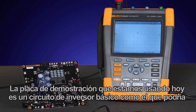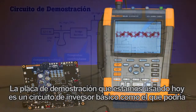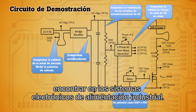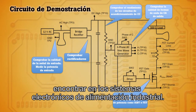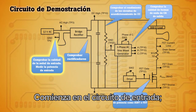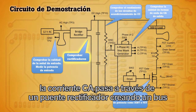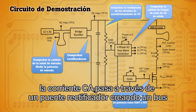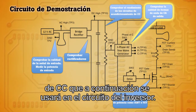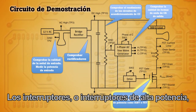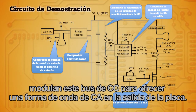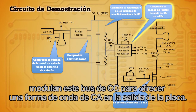The demo board we're using today is a basic inverter circuit that you might find in industrial power electronic systems. It starts with the input circuit. The AC goes through a bridge rectifier creating a DC bus that will then be used in the inverter circuit. Switches, or high-powered switches, modulate this DC bus to provide an AC waveform on the output of the board.